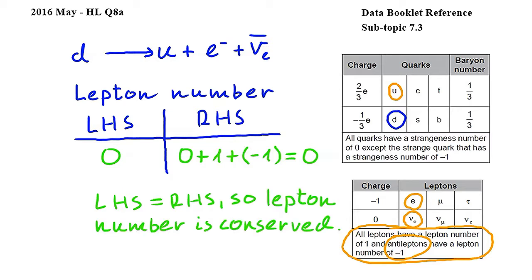In order to earn the mark on this question, please show that the left-hand side and the right-hand side of the equation are equal, including a calculation for the right-hand side, and then state that this means that lepton number is conserved. Please remember to include the zero for the up quark on the right-hand side. Omitting this zero is a typical mistake and would cause you to lose the mark.